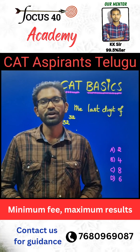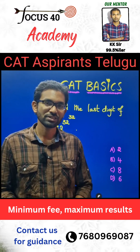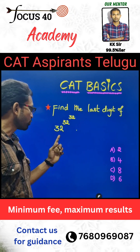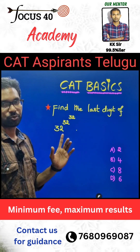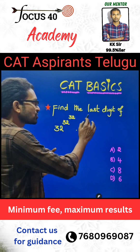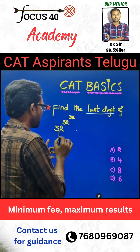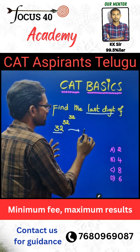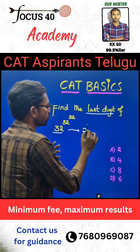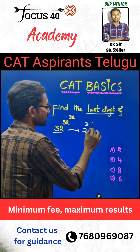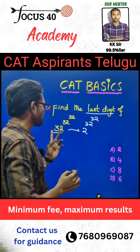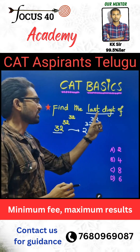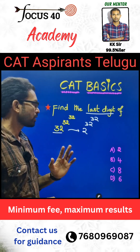Let us see an important concept regarding CAD examination. Find the last digit of 32 power 32. We have the base of 32 power 32. This is why we ask only the last digit.